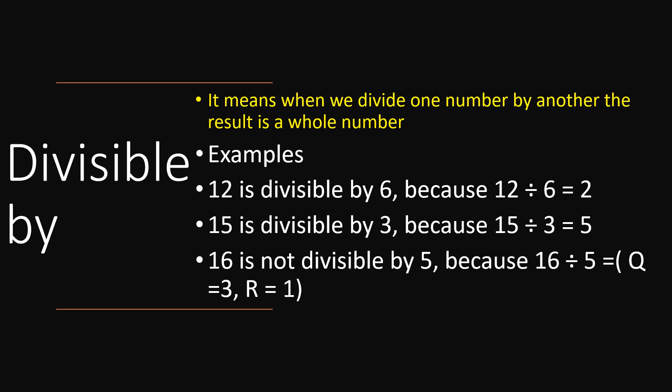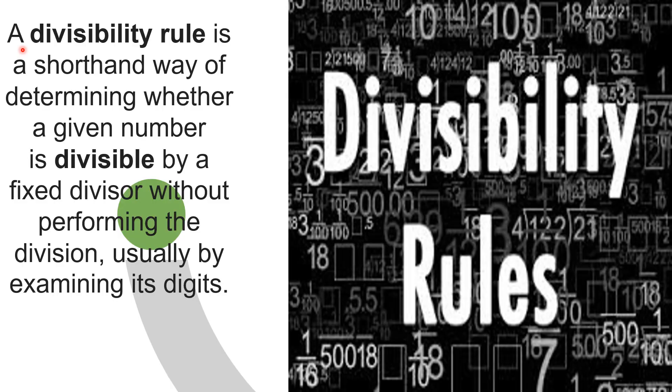15 is divisible by 3 because 15 divided by 3 equals 5 — no remainder. But 16 is not divisible by 5 because when we divide 16 by 5, the quotient is 3 but the remainder is 1. A divisibility rule is a shortened way of determining whether a given number is divisible by a fixed divisor without performing the division.